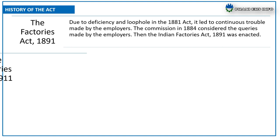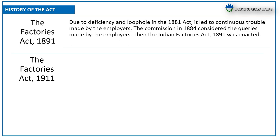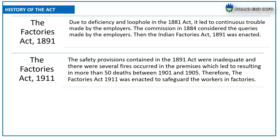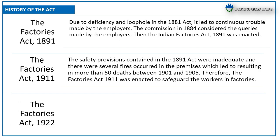Then the Indian Factories Act 1891 was enacted. Regarding the Factories Act 1911, the safety provisions contained in the 1891 act were inadequate, and there were several fires in the premises resulting in more than 50 deaths between 1901 and 1905. Therefore, the Factories Act 1911 was enacted to safeguard the workers in the factories.